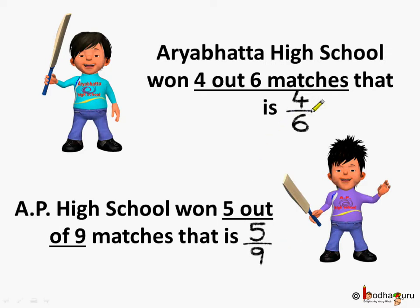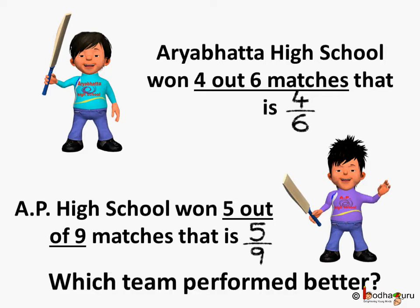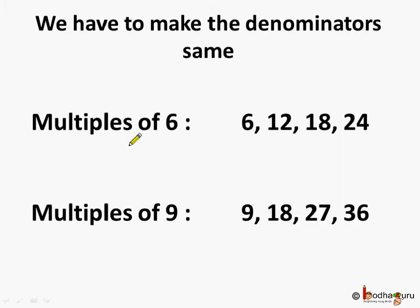Now here the fractions have different denominators — one has 6 and the other has 9. We cannot compare the fractions like this. For that we need to make the denominators same. So in order to know which team performed better, let's make the denominators of the two fractions the same.